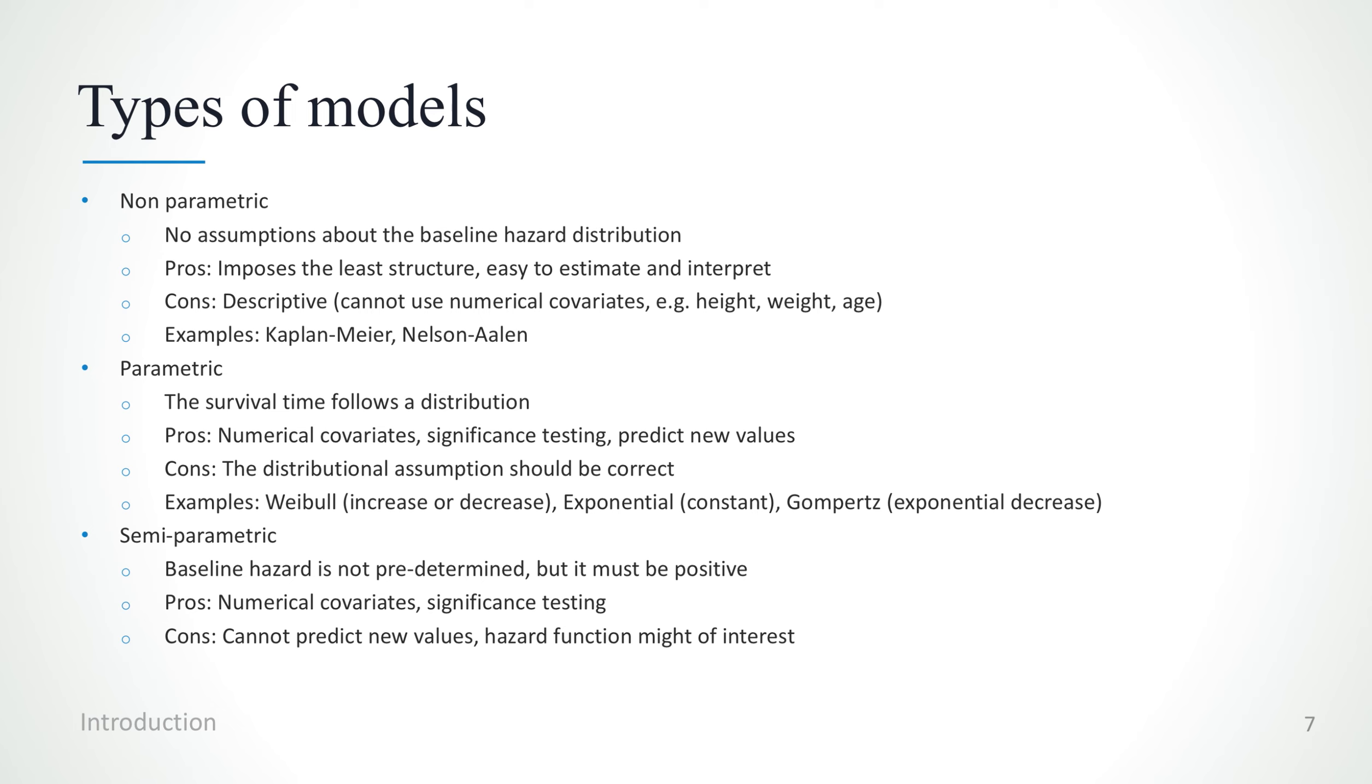The cons, which is the case for all parametric models in statistics, is that the distributional assumption actually needs to be correct. And in survival models it's not very easy to check that, but there are some tricks that we're going to see later on that can help you choose an appropriate parametric survival function.